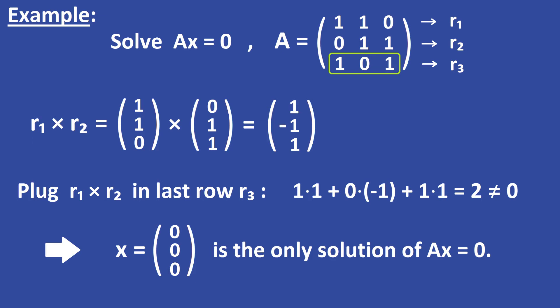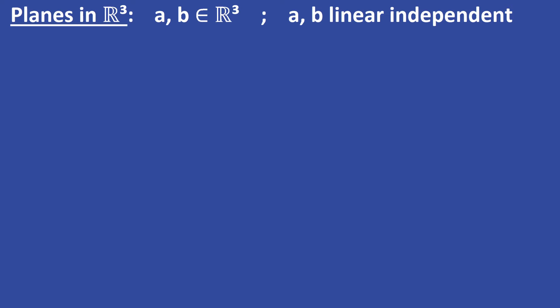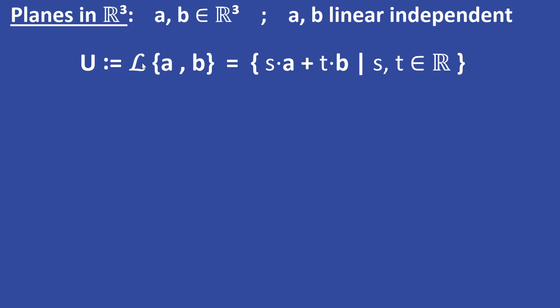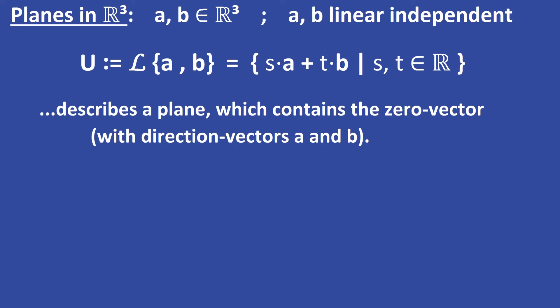Let's take a look at another application of the cross product — representing planes in R3. Let's say we have two linearly independent vectors A and B in R3. We look at the two-dimensional subspace U generated by these two vectors. U contains all linear combinations of the vectors A and B, and describes a plane with direction vectors A and B.